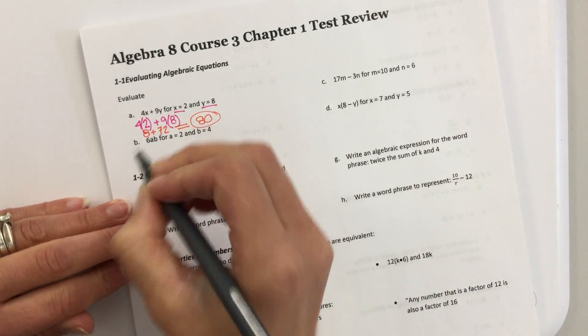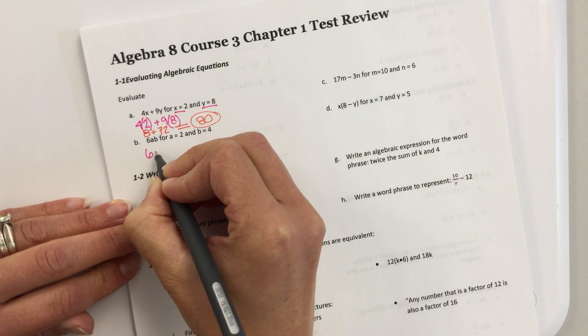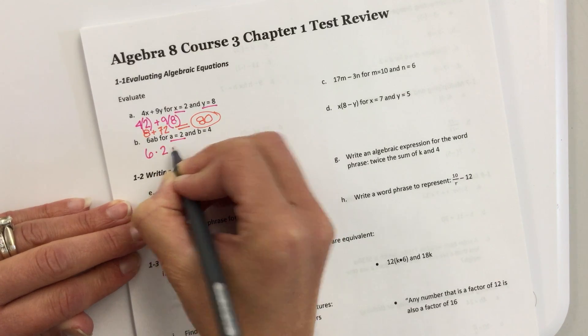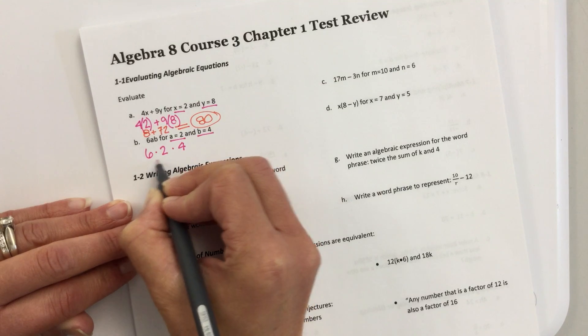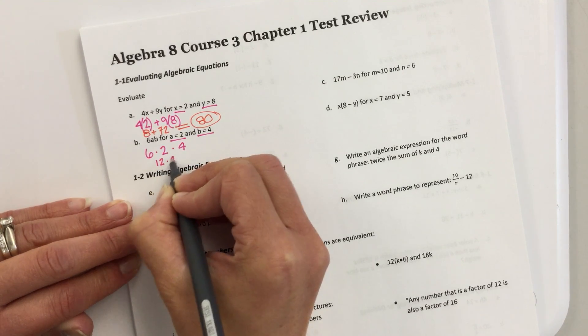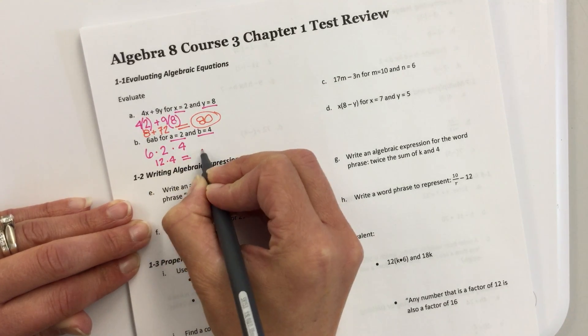Okay, the next one is 6 times A, which is 2, and B, which is 4. 6 times 2 is 12. 12 times 4 is 48.